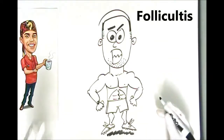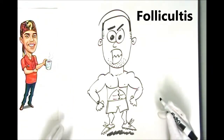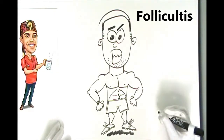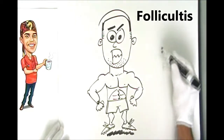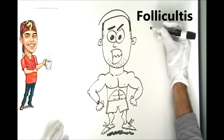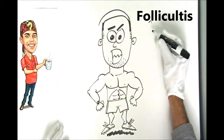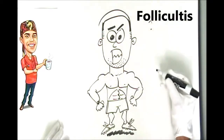It actually looks a lot like acne but there are three main differences which set it apart from acne. The first thing is that in acne the zits tend to be pretty big above the skin. With folliculitis the bumps are very fine and small.